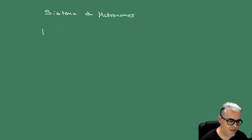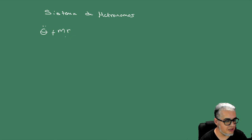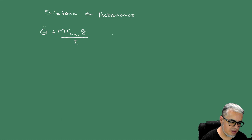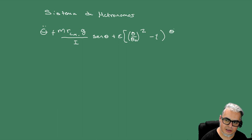Vamos a tener una cosa del estilo donde theta es la fase. Vamos a tener theta doble punto más la masa por... ¿qué tan lejos está el peso del pivote del metrónomo? Esto es el centro de masa por la aceleración de la gravedad sobre el momento de inercia, por el seno del ángulo, más epsilon —que es una cantidad pequeñita— por theta sobre theta_0 al cuadrado menos uno, por la derivada de theta, theta punto.